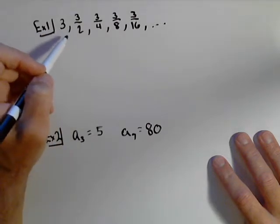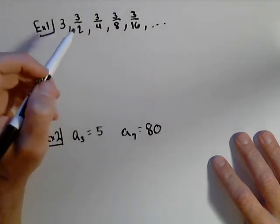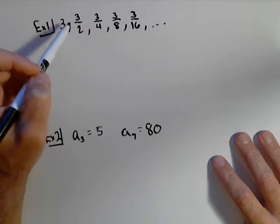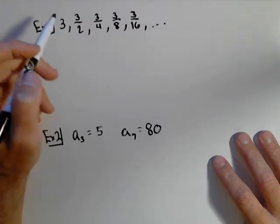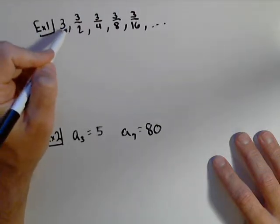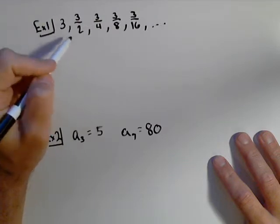So first, if we're given a list of numbers, the biggest thing we have to find is the common ratio. If the common ratio is not obvious, you can always divide successive terms. So here we can see that we're multiplying by one half each time.